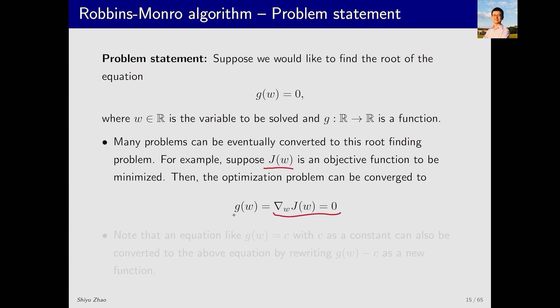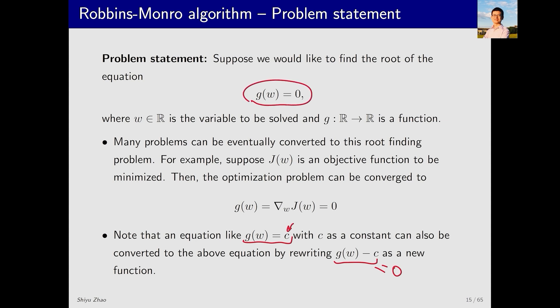Such optimization problems can be written in the form of g(w) equals zero, where g(w) refers to the gradient. Additionally, we may need to solve g(w) equals c, where c is a constant. By moving c to the left side, we can get a new function g(w) minus c that equals zero, still fitting this form. In summary, this problem may seem simple but is very important.